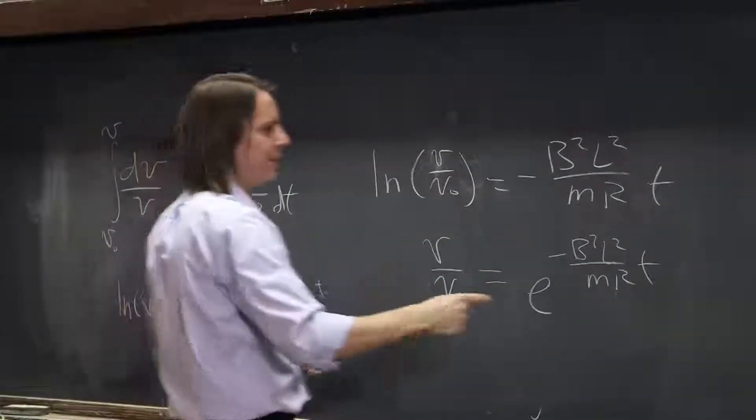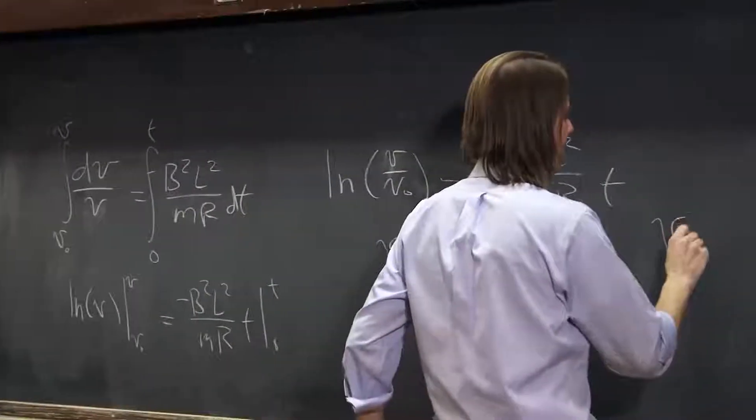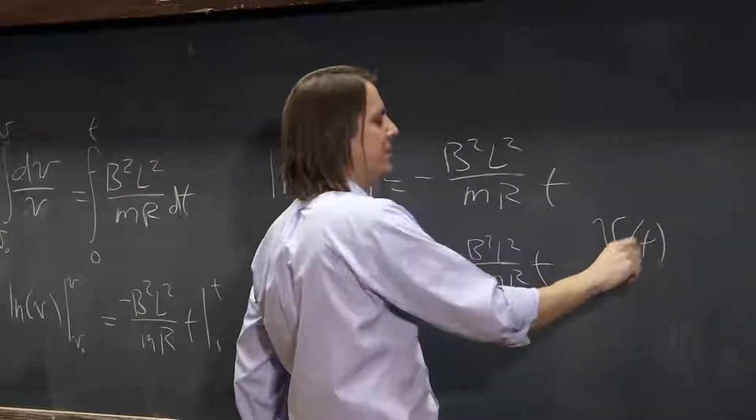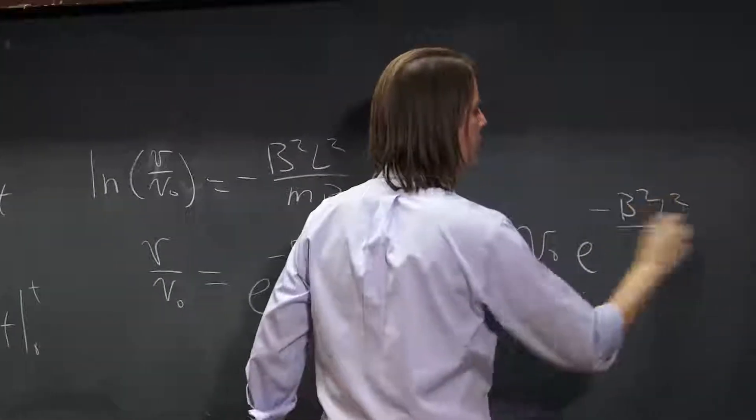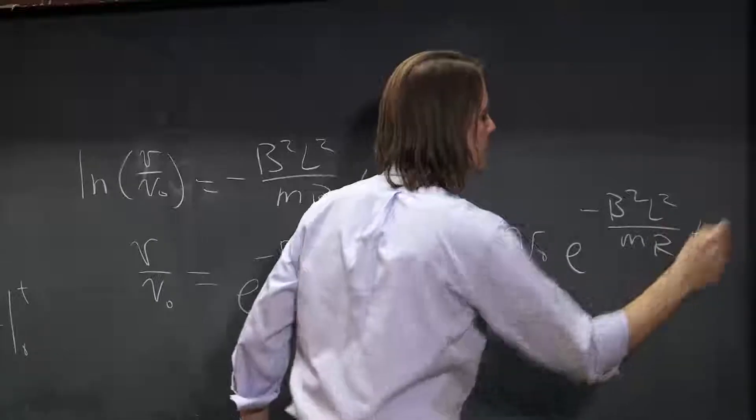And then multiply the v naught, and you get v as a function of time. I'll write it as a function of time now. Equals v naught e to the minus b squared L squared over m R t.